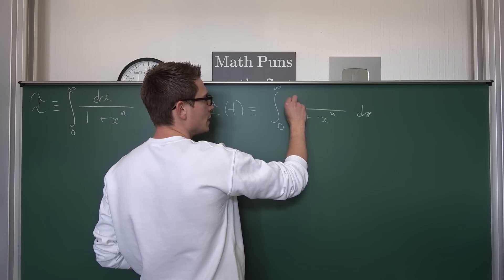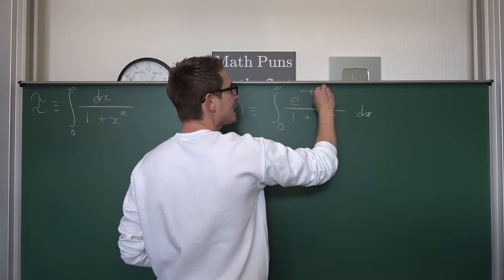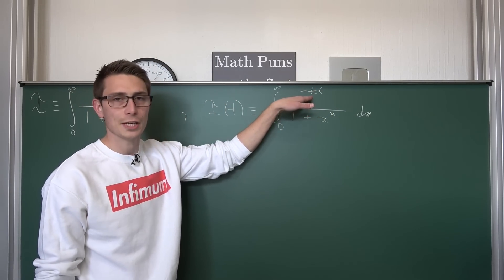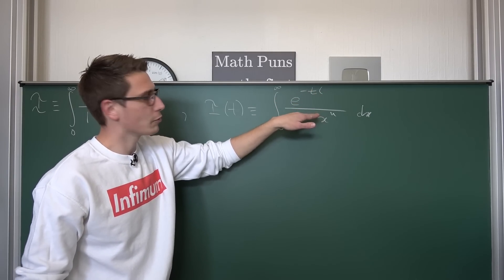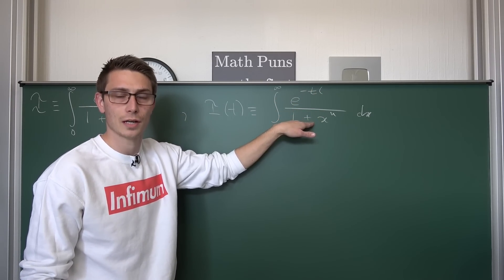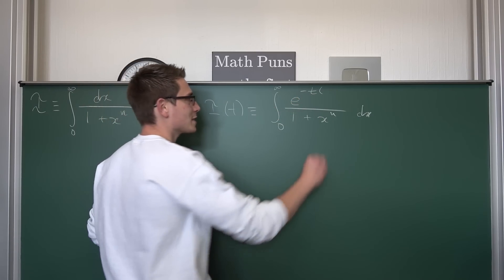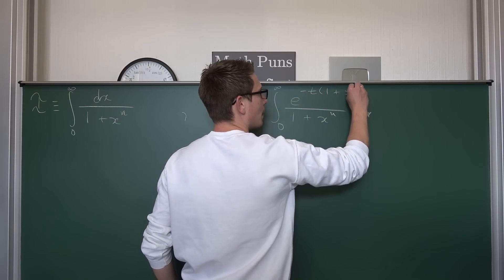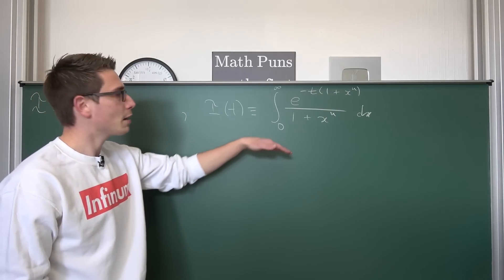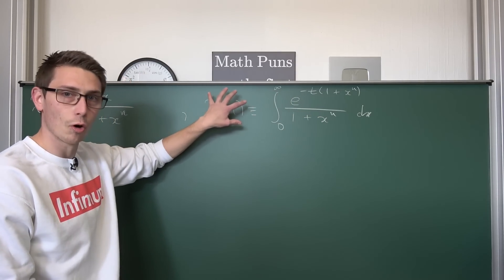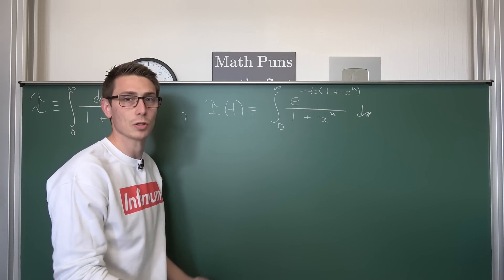What we are going to do is introduce the numerator as e to the negative t times the denominator. If we differentiate this exponential function we want to get rid of our denominator in the process. So we plug our denominator up into the exponent. Then we differentiate this whole parameterized function with respect to t and see what we get.